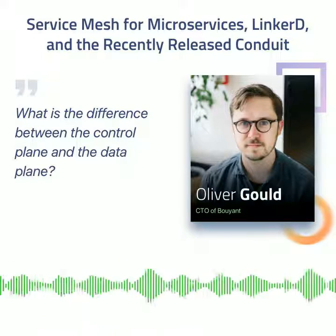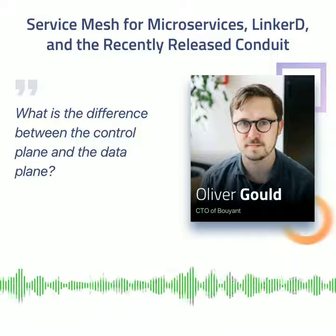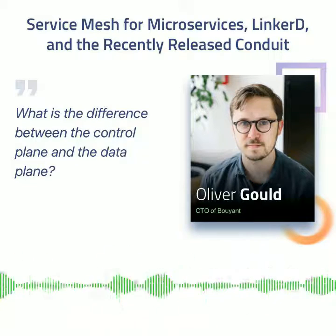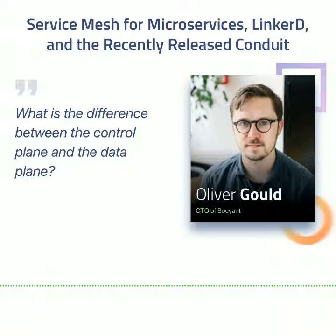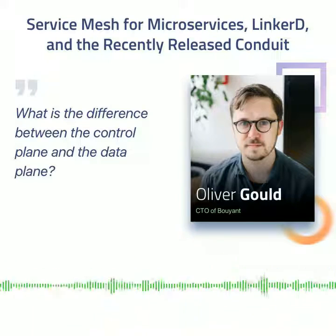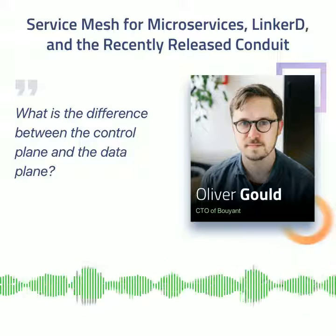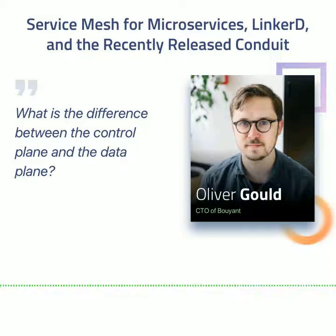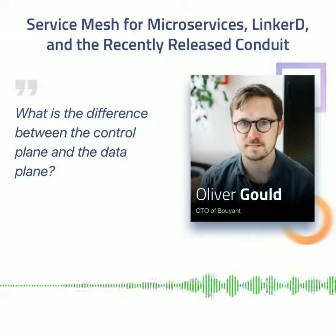The control plane is the set of services or APIs where we put all of the policy and configuration for that. What we think of in the control plane are things like service discovery — what IPs and ports are part of the service. We might think of things like routing rules, so when I see a request to this host, it's actually this other service instead. Things like timeout policies and success rate information. All of the policy information should be stored somewhere centrally. In Conduit, that's actually built into the Kubernetes API, so we'll be storing those things in Kubernetes itself.